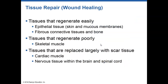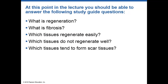Tissues that typically regenerate relatively easily are skin, bone, and blood. Tissues that don't regenerate very effectively include skeletal muscle. Tissues that are almost always replaced with scar tissue are nerves and cardiac muscle. You should be able to answer: What is regeneration? What is fibrosis? Which tissues can regenerate easily? Which tissues don't? And when does scar tissue form?